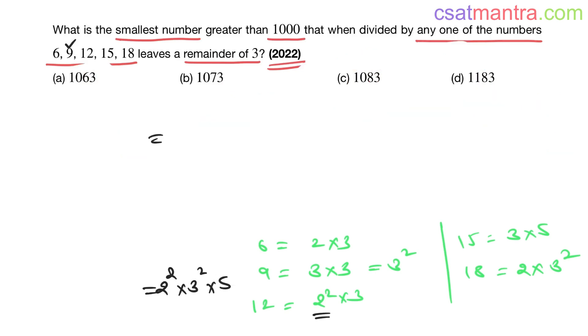I always combine 5 and 2 to make 10 so multiplication becomes easier. So 2 × 9 = 18, 18 × 10 = 180. LCM is 180. But we want the number greater than 1000, so we have to consider multiples of 180.